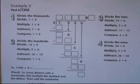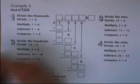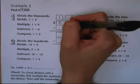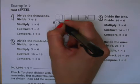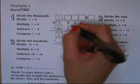Let's go ahead and move on to example two. It says to find 7,946 divided by 6. Step one is to divide the thousands. So we're going to take 7 divided by 6. We know that 6 goes in there 1 time. 6 times 1 is 6. If we do 7 minus 6, that's left with 1. We bring down our 9.